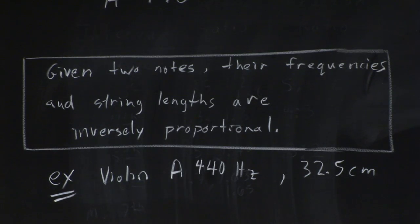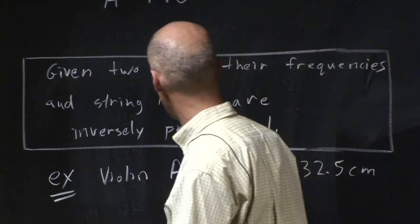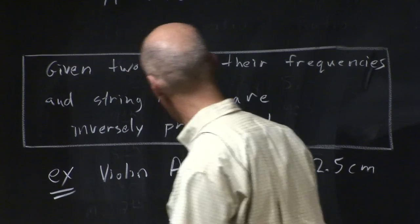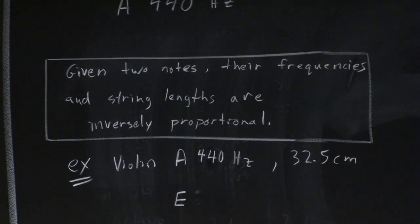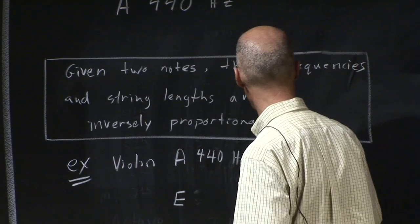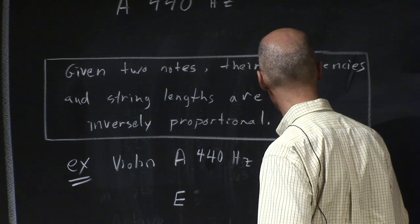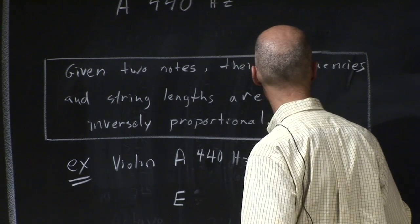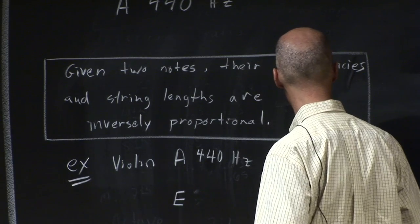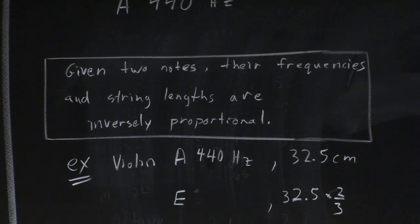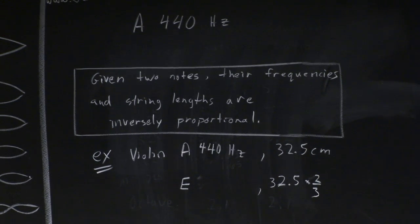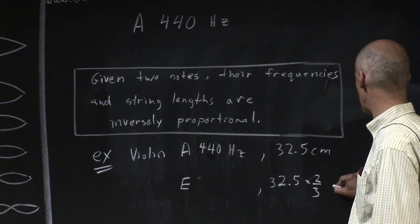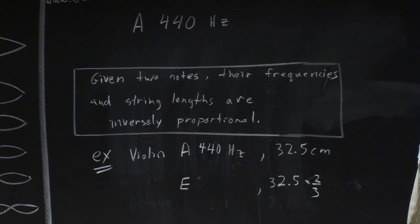So what's going to happen if I now compare that to the E? We already know that to get the E, the string length is going to have to be 32.5 times two-thirds. We're going to make it two-thirds as long. So we have this full length on the A string, and we're going to make it two-thirds as long.